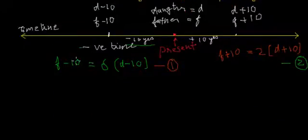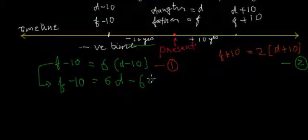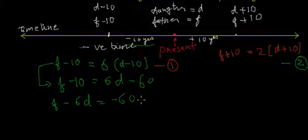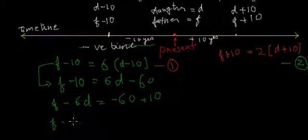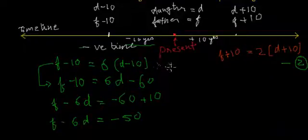So we have two equations. Now if we simplify the first equation — F minus 10 = 6(D minus 10) — we get F minus 10 = 6D minus 60. Arranging all variables on the left-hand side gives us F minus 6D = minus 60 plus 10, which simplifies to F minus 6D = minus 50. We will call this Equation 1.